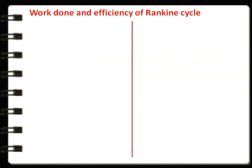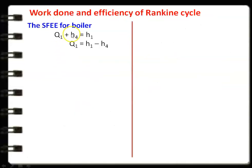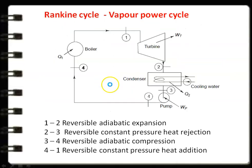Now we calculate the work done and efficiency of the Rankine cycle. We apply the steady flow energy equation to each of the four components — boiler, turbine, condenser, and pump. For the boiler: inlet condition is 4, outlet is 1; heat is supplied. For the turbine: inlet is 1, outlet is 2; work is produced. For the condenser: inlet is 2, outlet is 3; heat is rejected. For the pump: inlet is 3, outlet is 4; work is given to the pump.